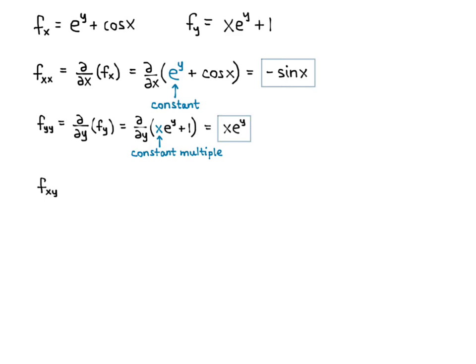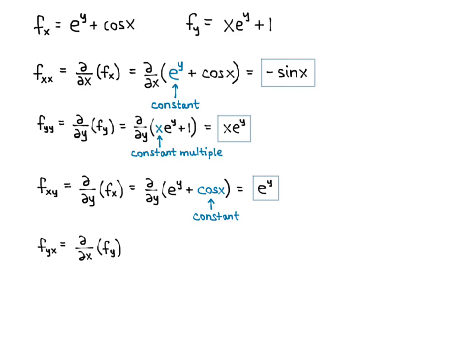For f sub xy, that's the partial derivative with respect to y of f sub x — we did f sub x first because x was written closest to f. So we take the partial derivative with respect to y of e to the y plus cosine x. Cosine x is a constant with respect to y, so we just get e to the y. For f sub yx, that's the partial derivative with respect to x of f sub y — the partial derivative with respect to x of x e to the y plus 1. Since e to the y is a constant multiple, the derivative of x is 1, giving us e to the y.